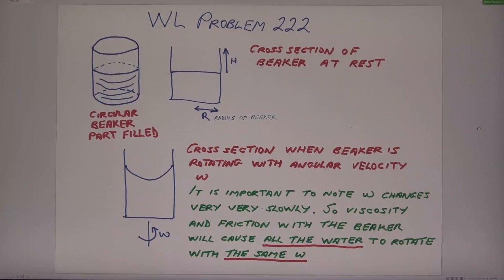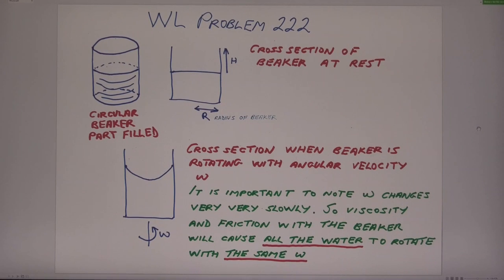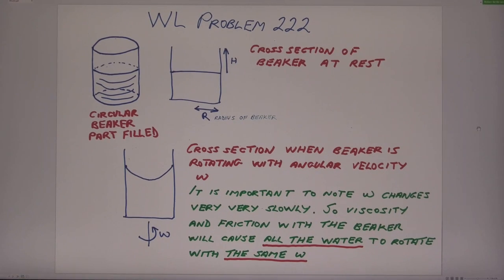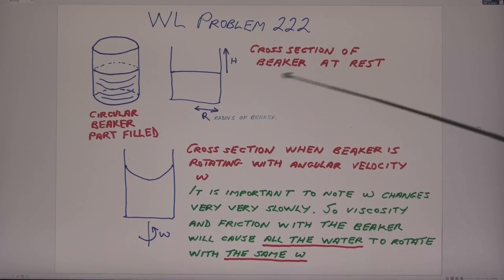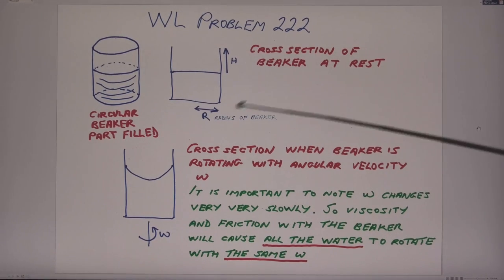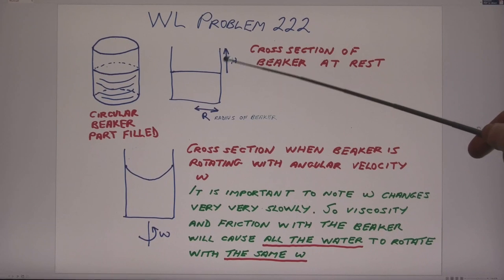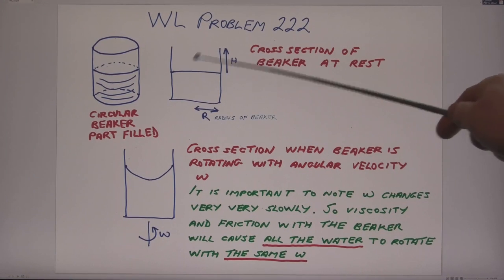This is Keith's solution to Walter Lewin's problem 222, and it's actually a problem I suggested some time ago when Walter was asking Eugen and myself for a few suggestions. Quite a well-known problem, I think. We have a circular beaker that is part filled with water, and it's going to be rotated about its central axis. The radius of the beaker is capital R. The height of the edge of the beaker, top of the beaker, above the water is H. This is a cross section of it at rest.